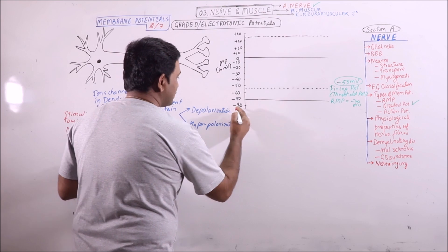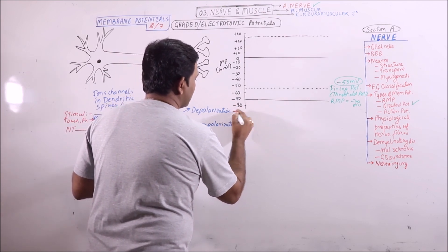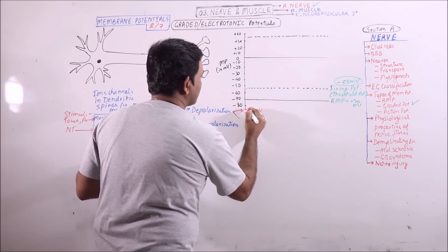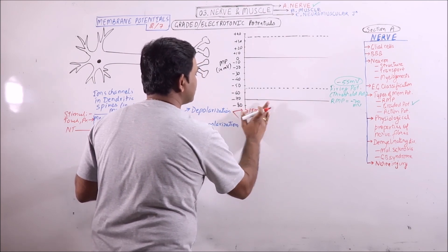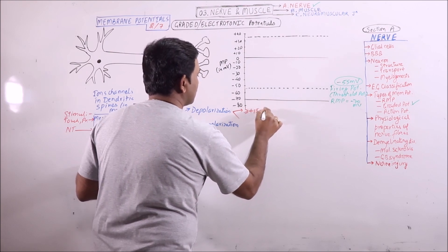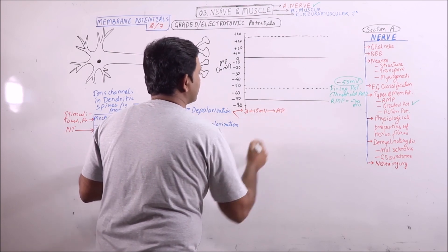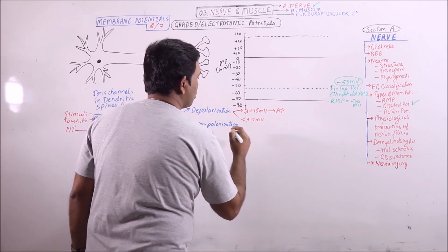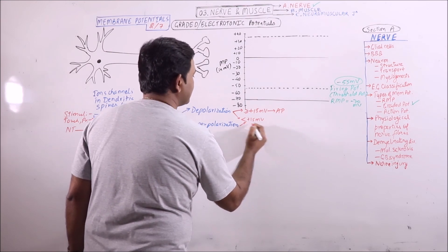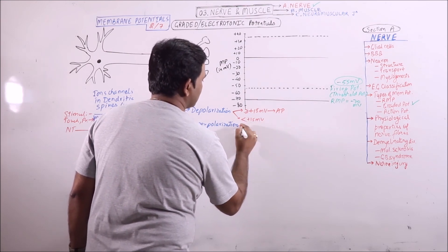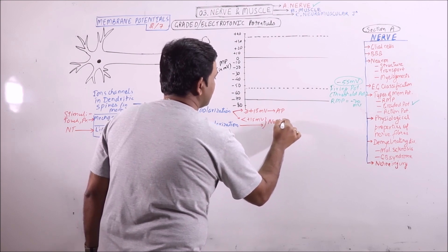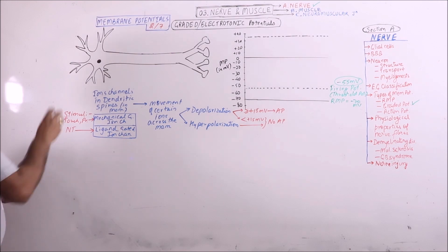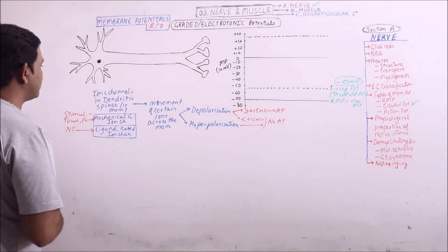If depolarization is greater than or equal to 15 millivolts, that is plus 15 millivolts, action potential will be initiated. And if it is less than plus 15 millivolts, or if it is hyperpolarization, then in both cases no action potential will occur. So this is the local potential, which is known as graded potential.